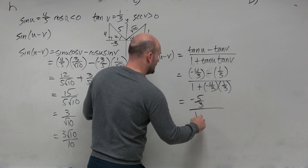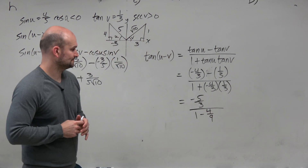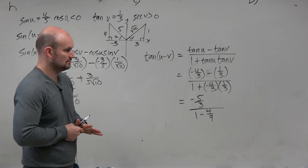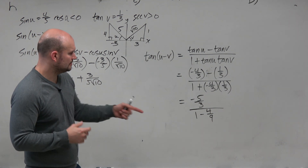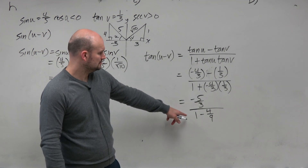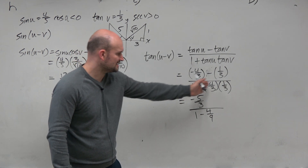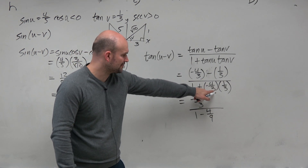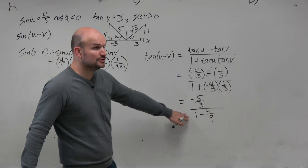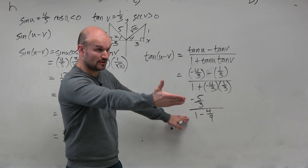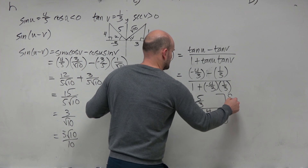Divided by 1 — that turns into a minus 4 ninths. Could you just make 1 into 3 over 3? You mean you could make this over 9 over 9? You still can't subtract — you've got to multiply those anyway. Then you could do 9 over 9. You could do 9 over 9 and then multiply by the reciprocal. Or, if you just don't like fractions, just multiply everything by 9.